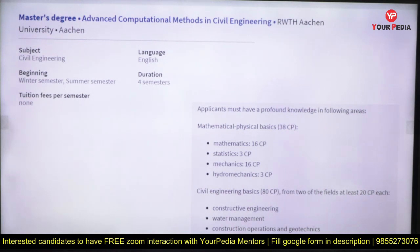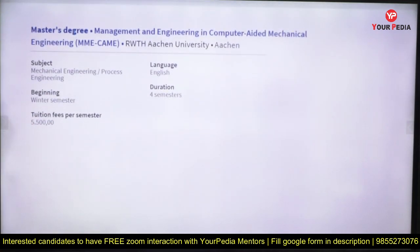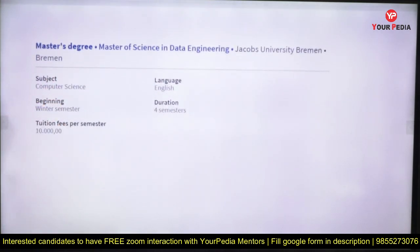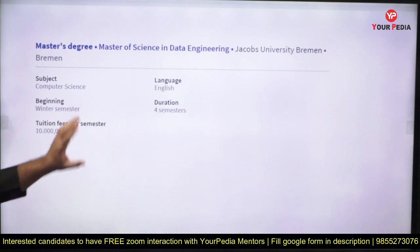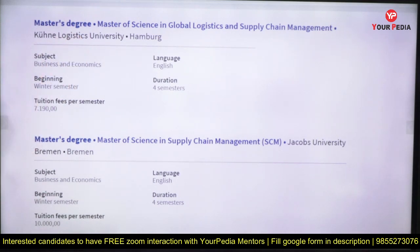Integrated Circuit Design, Advanced Computational Methods in Civil Engineering, Computational Modeling and Simulation — these are all available domains. In Dresden: Management and Engineering in Computer Aided Mechanical Engineering. Wherever there is a tuition fee, you should surely apply — those are highly job-oriented courses. Computational Mechanics of Materials and Structures has variable tuition fees. Data Engineering also has fees — it is value for your money. Supply Chain Management and Logistics are industrially highly valuable courses.